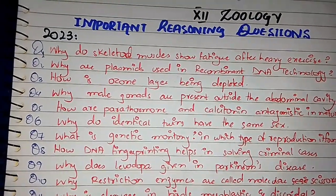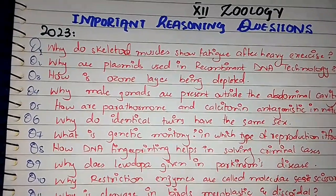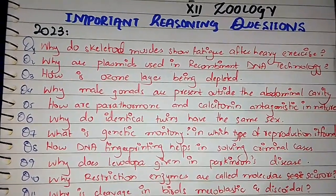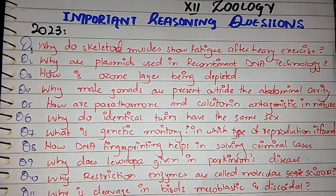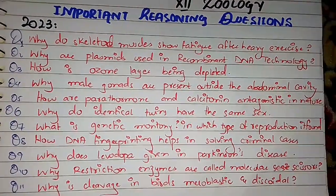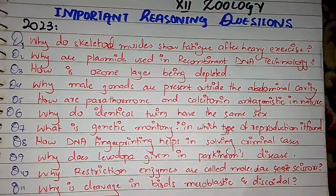That's why plasmids are used in recombinant DNA technology as a vector.